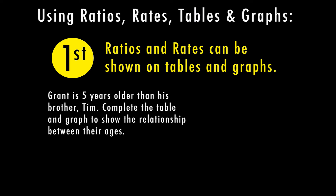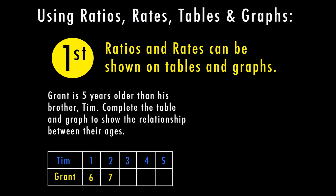Here we're talking about Grant, and he is five years older than his brother Tim. We're going to complete the table and the graph to show the relationship between their ages. For the table, Tim is one, two, three, four, and five, and Grant is five years older than him. So when Tim is one, Grant is six. When Tim is two, Grant is seven. When he's three, Grant is eight. When he's four, Grant is nine. And when he's five, Grant is ten.